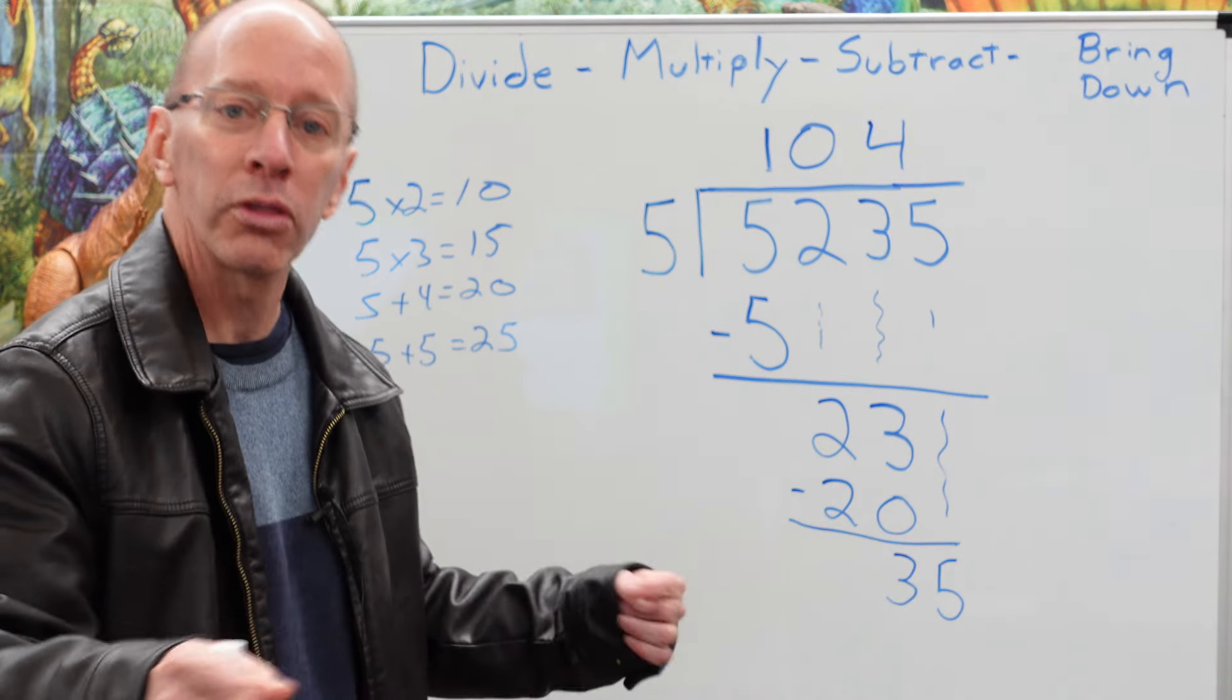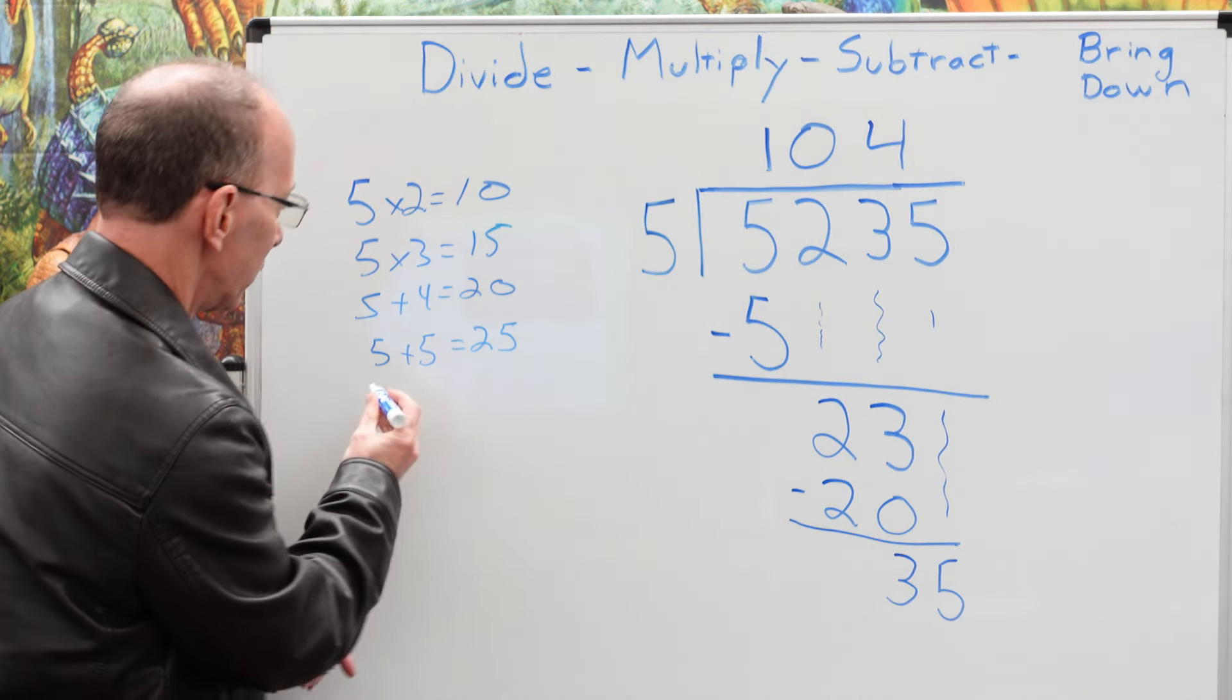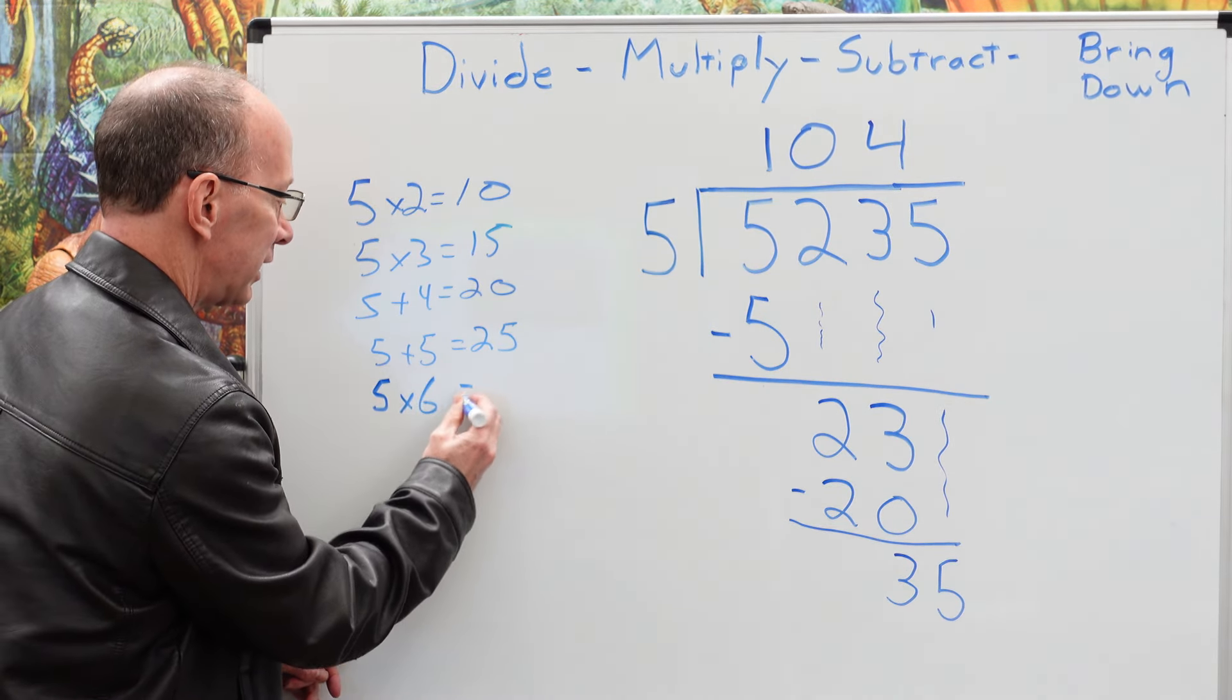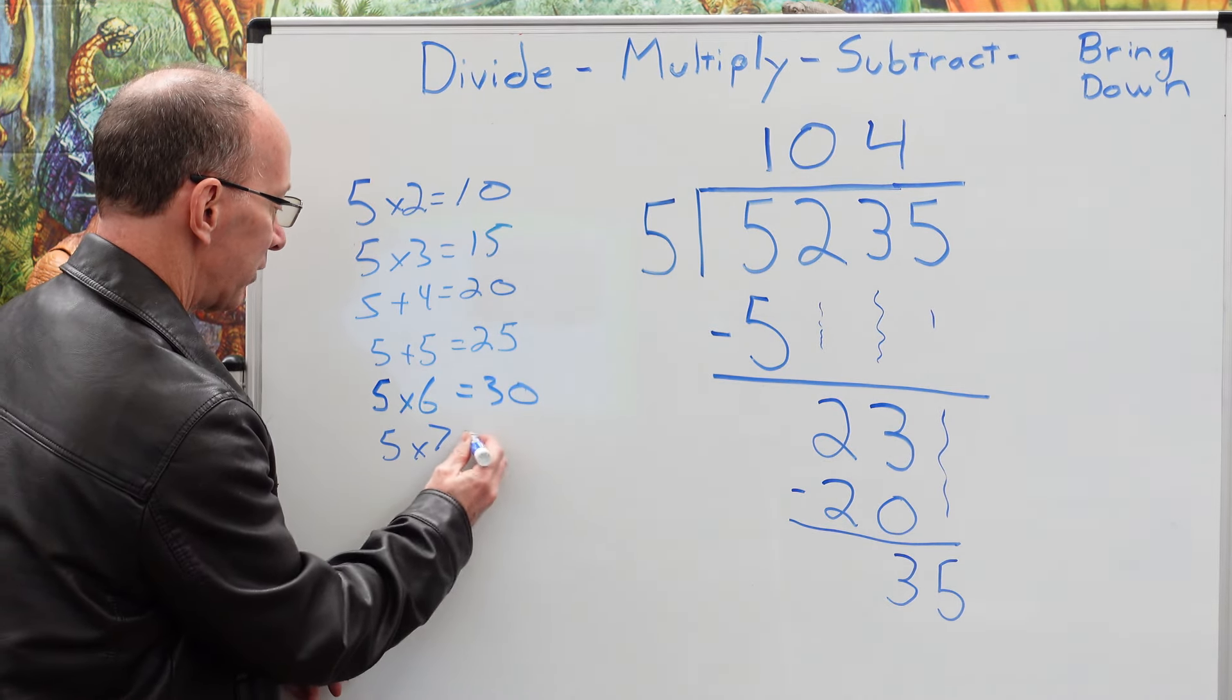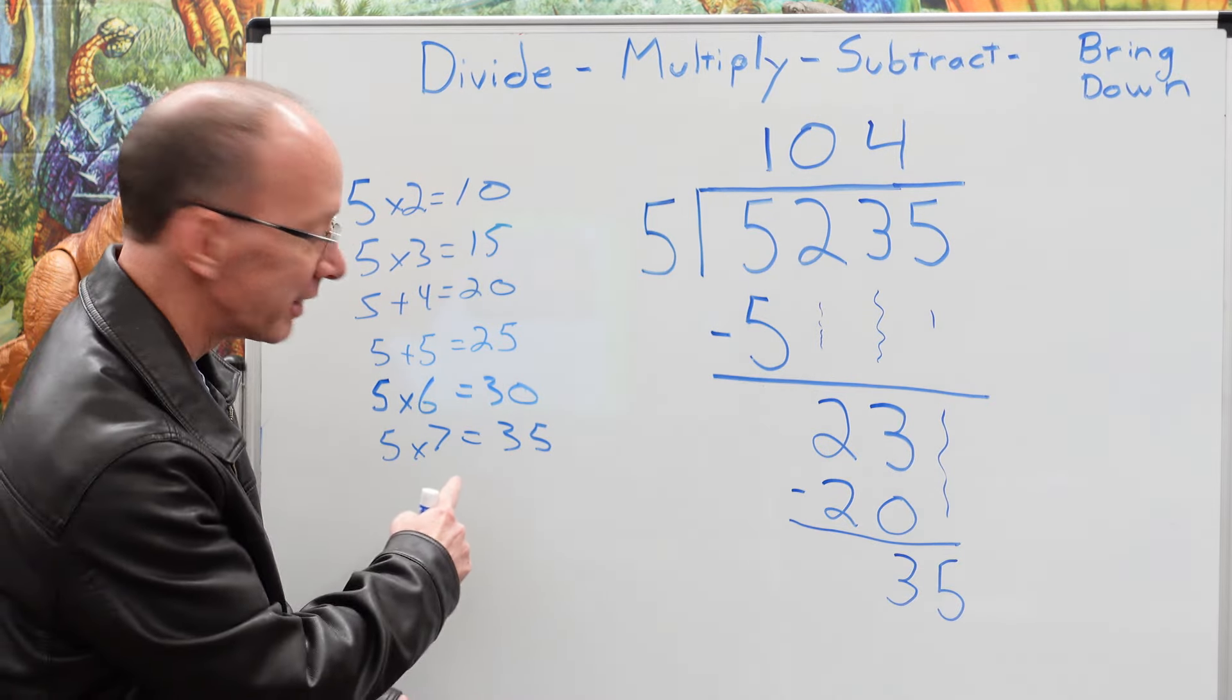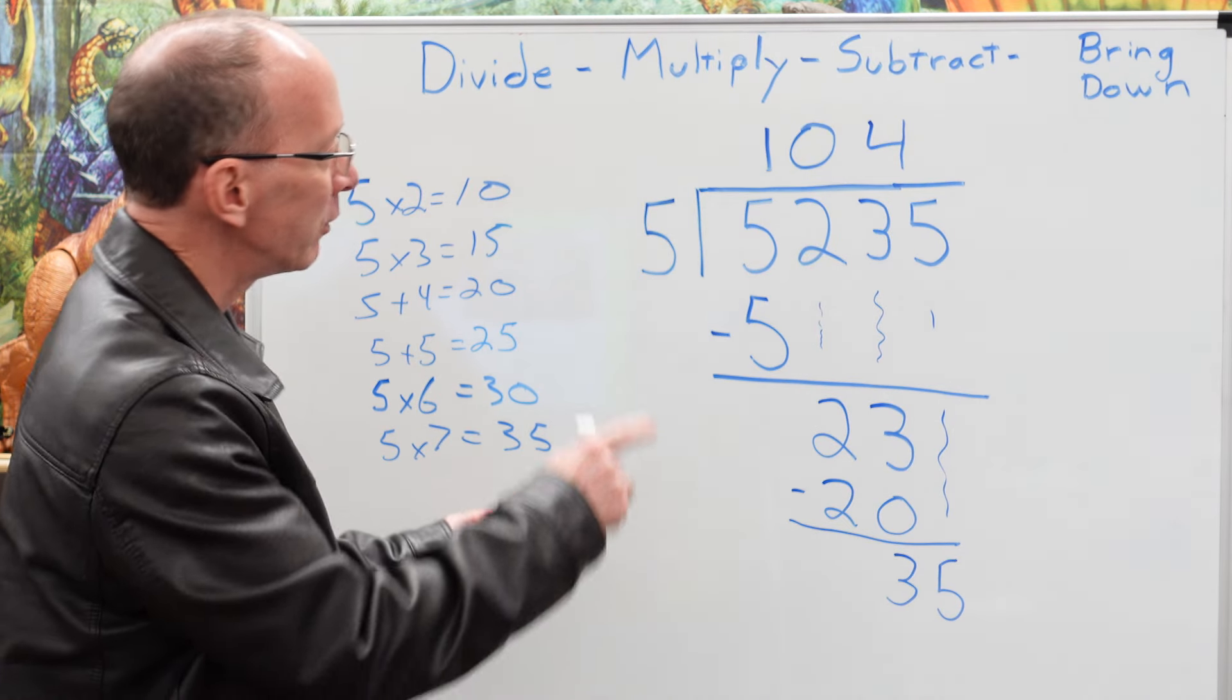Start the whole thing over. Again, how many times can I put five into 35? I'm going to do a few more facts over here. Five times six equals 30. Five times seven equals 35. Bingo! We hit it right at the, hit the nail on the head. So it would be seven.